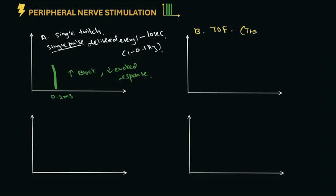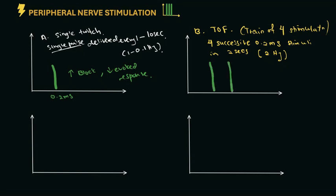Next, the most popular pattern, the train of four, which literally means four successive stimuli delivered in 2 seconds, or 2 hertz. You have four equal stimuli of 0.2 milliseconds with a gap of 0.5 milliseconds.